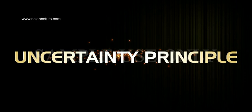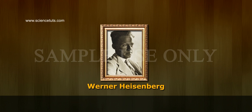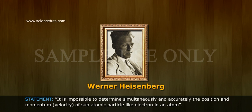Uncertainty Principle. In 1927, Werner Heisenberg proposed the Uncertainty Principle. Statement: It is impossible to determine simultaneously and accurately the position and momentum (velocity) of subatomic particles like electrons in an atom.